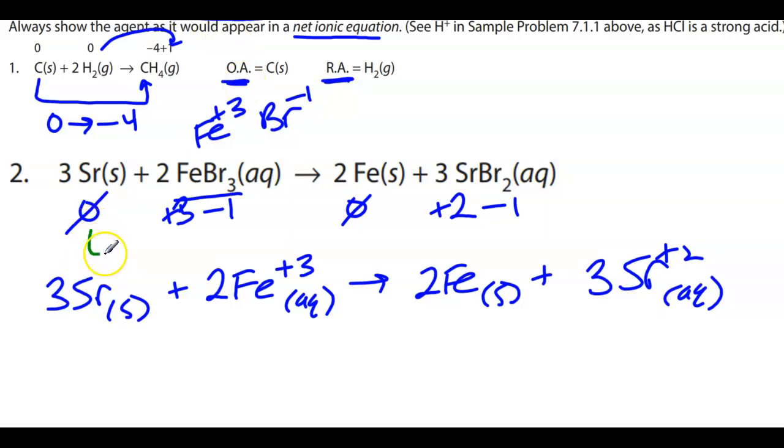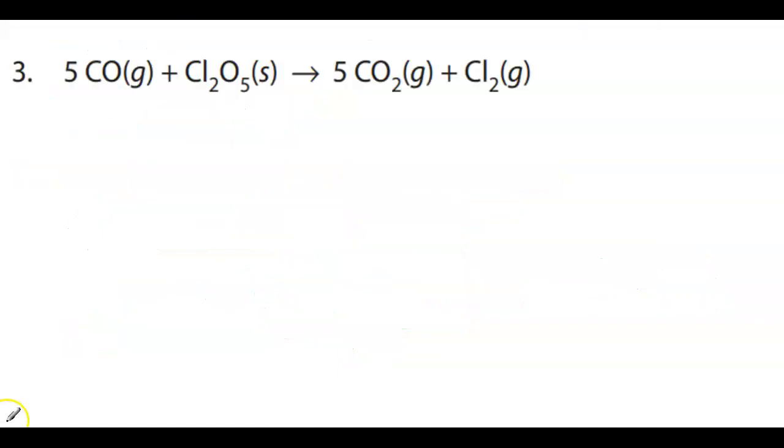Okay, so strontium is going from zero to plus two, that means that it is being oxidized, which means that strontium is the reducing agent, right? It's being oxidized, so it's the agent of the opposite process. Iron is going from plus three to zero, which means it is gaining three electrons. So because this is being reduced, that means it is the oxidizing agent. Hopefully that makes sense. Let's do the next one.